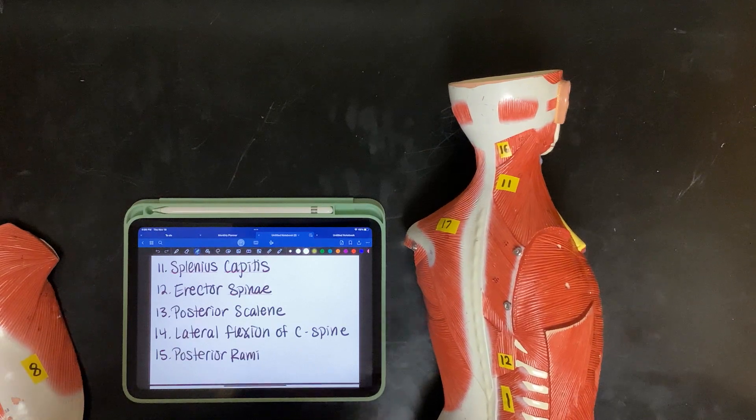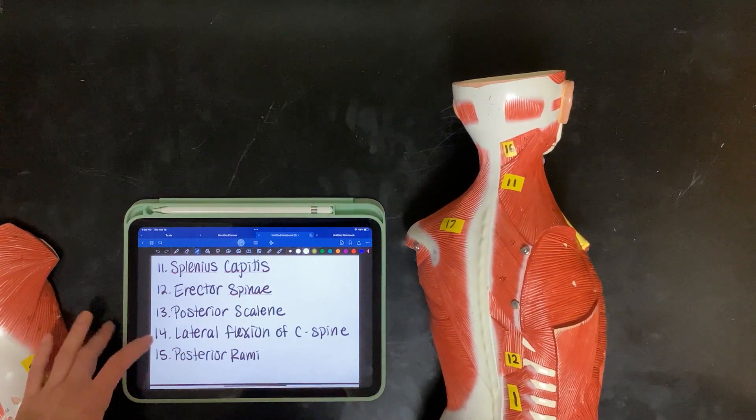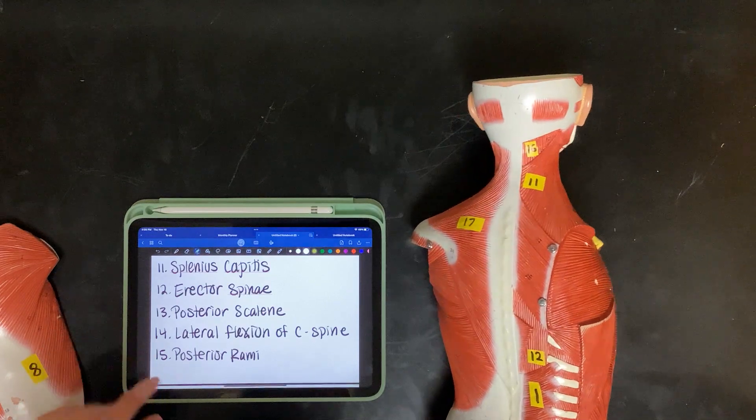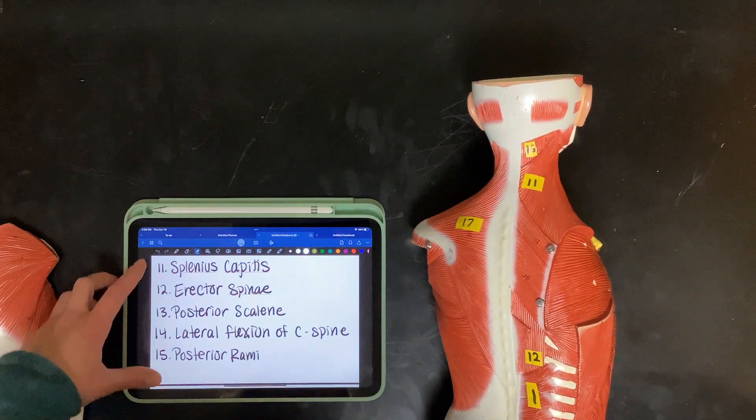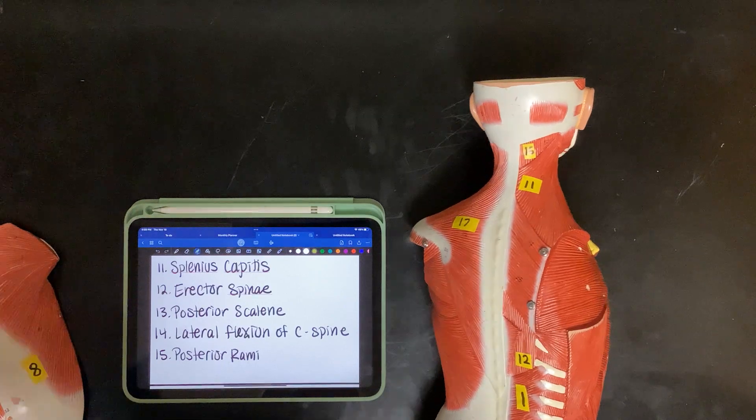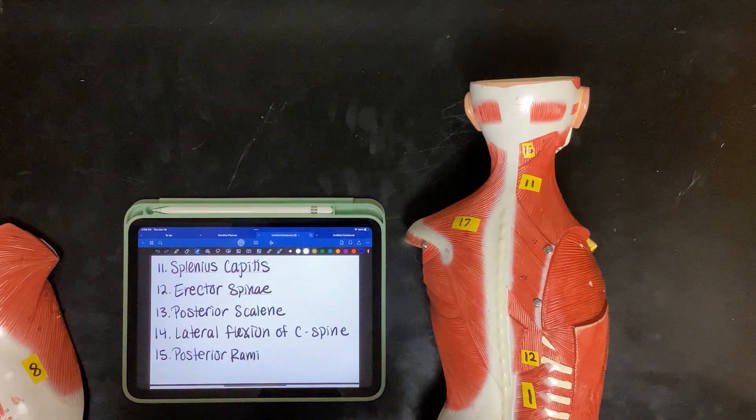And contracting unilaterally, they do lateral flexion. And they're all, or, eleven and twelve, which is what fifteen was asking, is innervated by posterior rami.